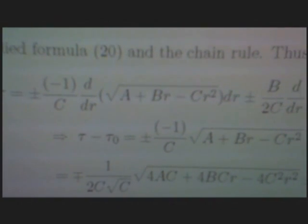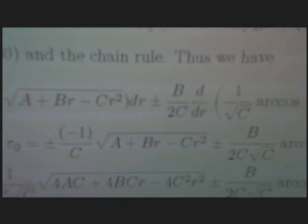Where we applied formula 20 and the chain rule. Thus we have d tau equal to plus or minus minus 1 over c times d by dr of square root of a plus br minus cr squared dr, plus or minus b over 2c times d by dr of 1 over square root c times arccos of b minus 2cr over square root of b squared plus 4ac, times dr.